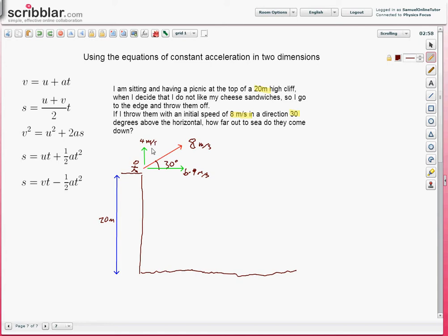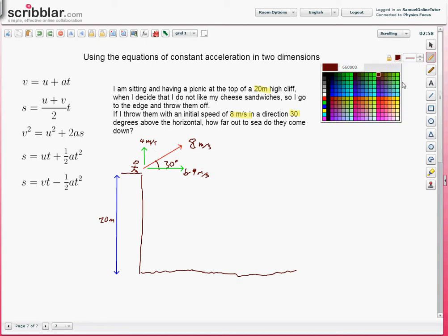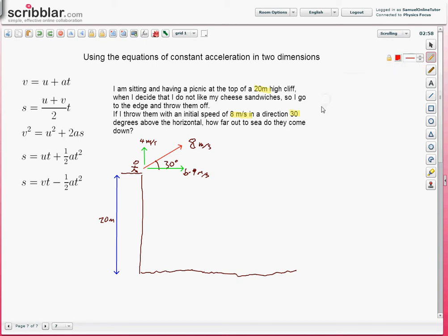Now, this object is going to follow a path like this. It's actually a parabola, the shape of that curve. Which means it's a y equals x squared kind of a shape until it lands in the sea, just there. Splash.